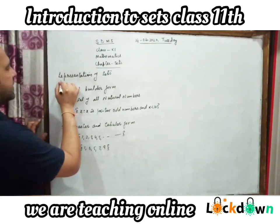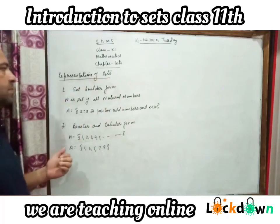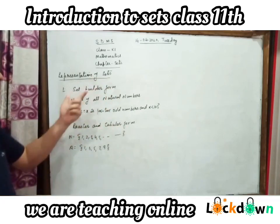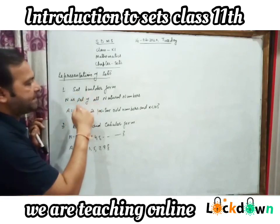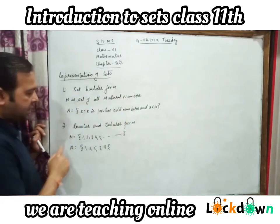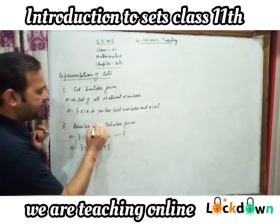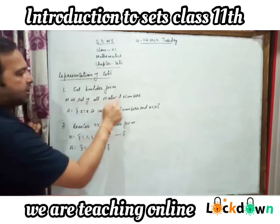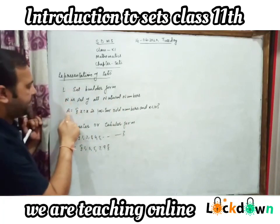Next is the representation of a set. We can represent a set by two methods. First is Set Builder Form, second is Roster or Tabular Form. In Set Builder Form, we represent the set as a statement — for example, N is the set of all natural numbers. In Roster or Tabular Form, we list the elements — for example, N = {1, 2, 3, 4, 5, ...}.